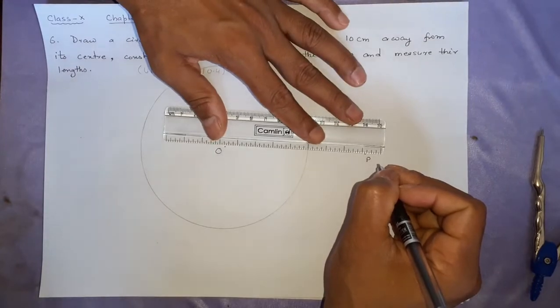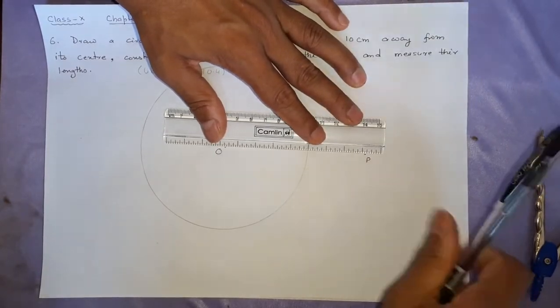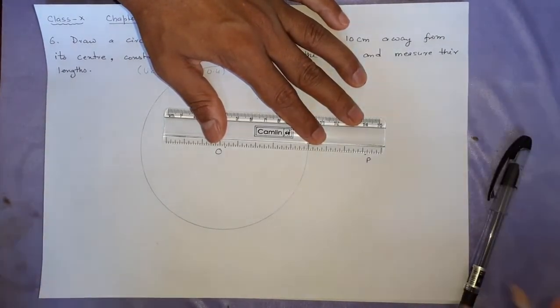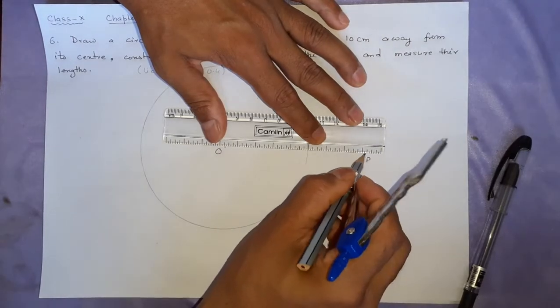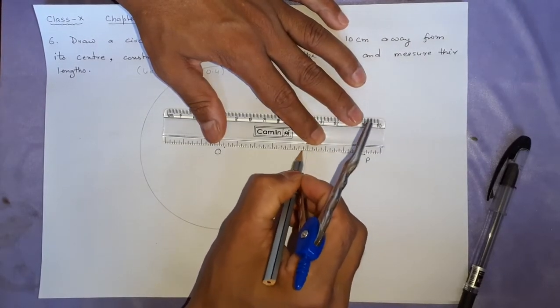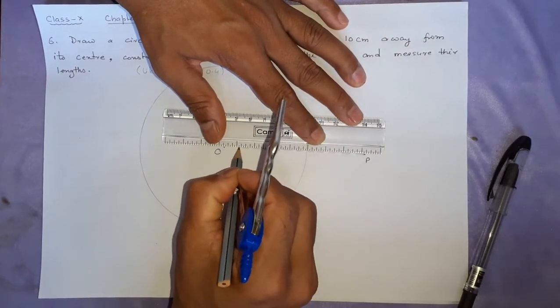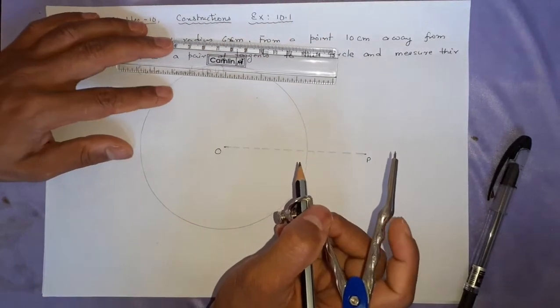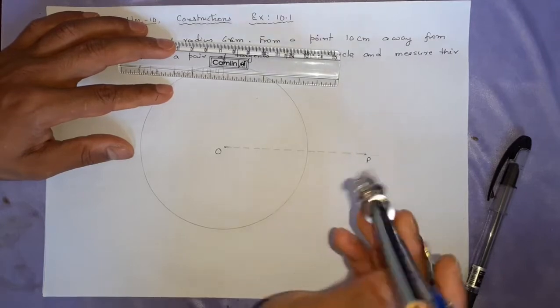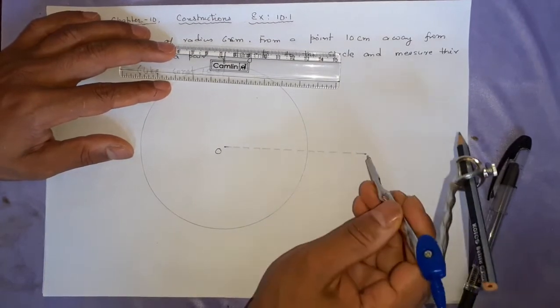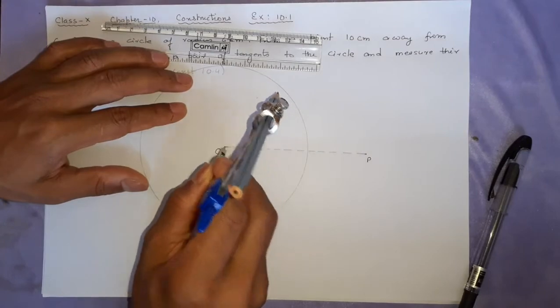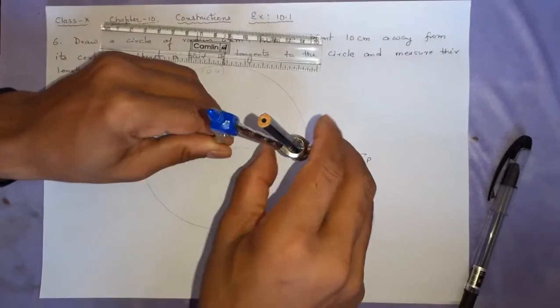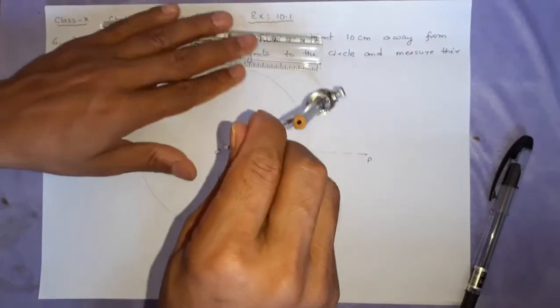So, first of all, we are going to join the two points, of course, with a pencil. Done. After this, draw the right from OP, you have to make a perpendicular bisector. How to make? More than half, it is almost this. Let me take a little bit further than this.